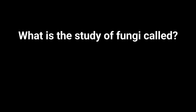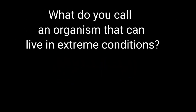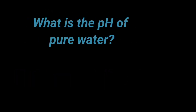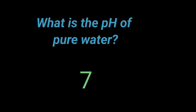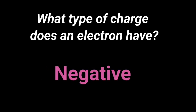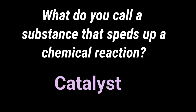What is the study of fungi called? Mycology. What do you call an organism that can live in extreme conditions? Extremophile. What is the pH of pure water? 7. What type of charge does an electron have? Negative. What do you call a substance that speeds up a chemical reaction? Catalyst.